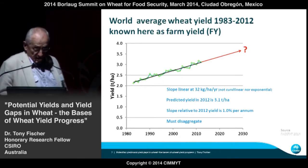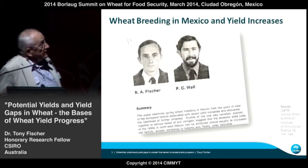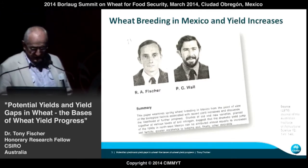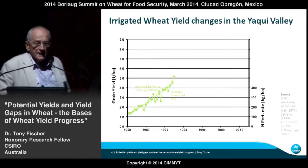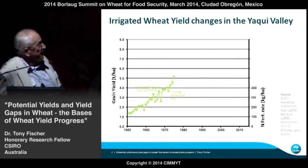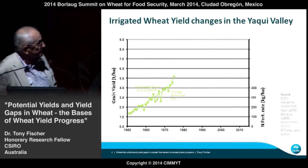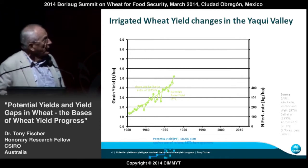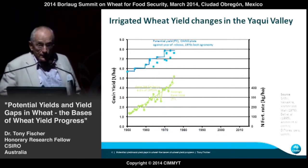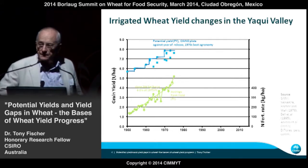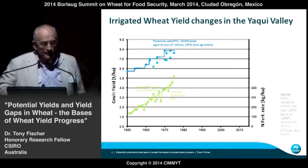Some time ago, Fisher and Wall produced a paper that came out in 1976. We looked at wheat progress in the Yaqui Valley up to 1975. The progress was 266 kilograms per hectare per year in farm yield — about 6% progress expressed relative to the 1975 yield. We also grew all those varieties in plots at Ciano experiment station under the best agronomy, and plotted their potential yields against the year of release.